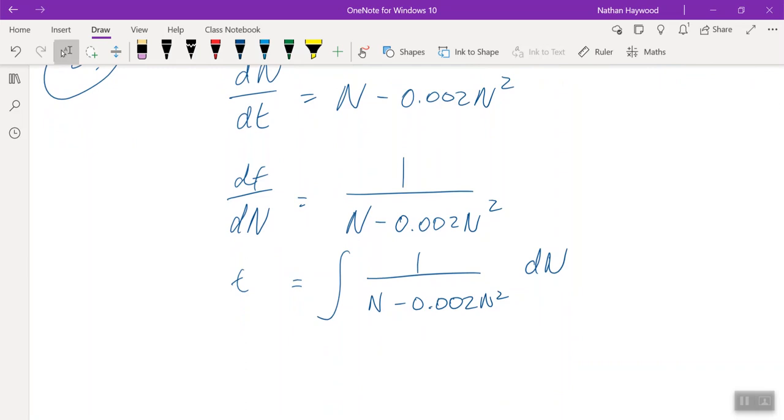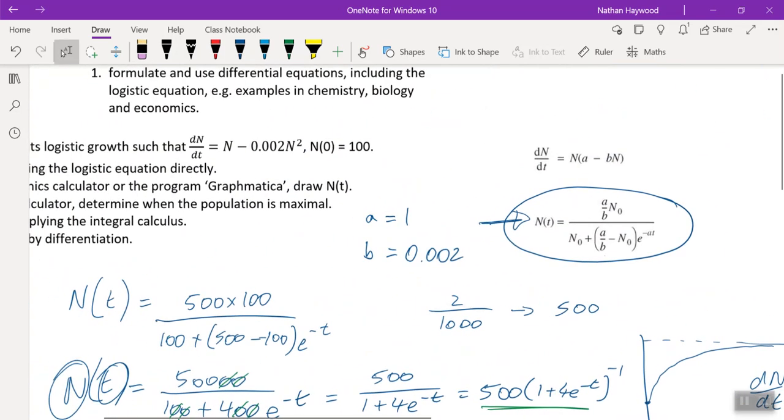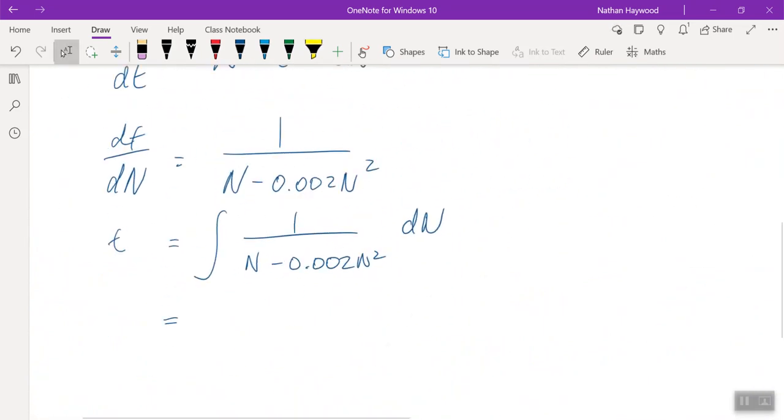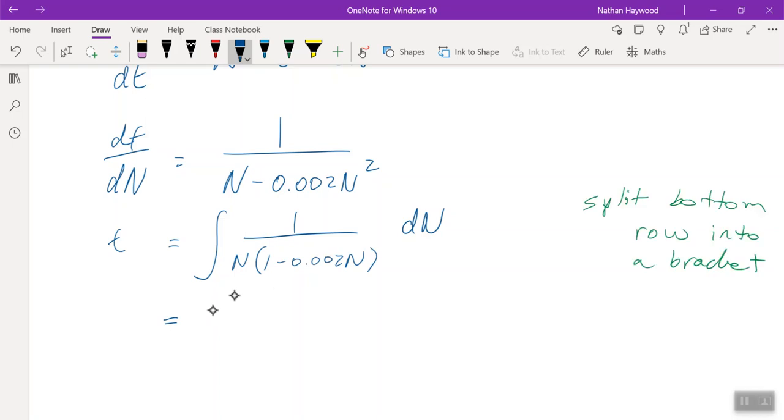We do have to use partial fractions. So we can actually write the bottom row in that form that I showed you here. So we could rewrite this bottom row as N, what would inside the brackets be? N. Okay. Everyone with me so far? Does everyone remember this bad boy? N. We have a number. Good job.